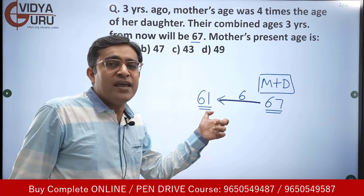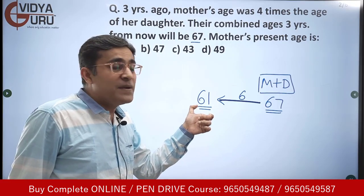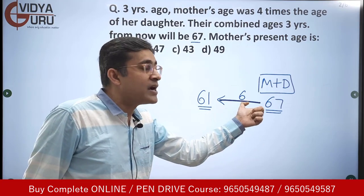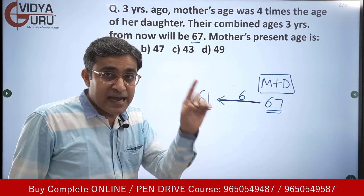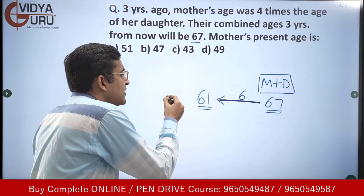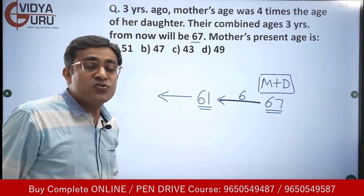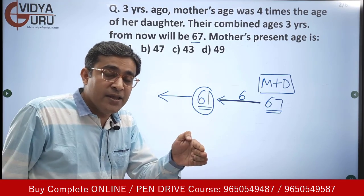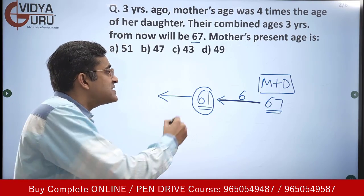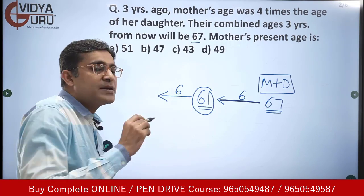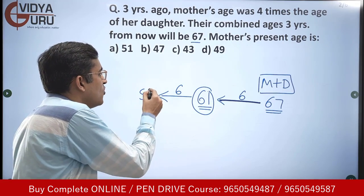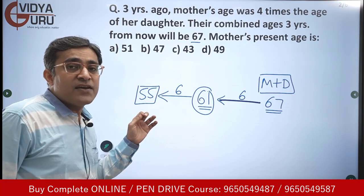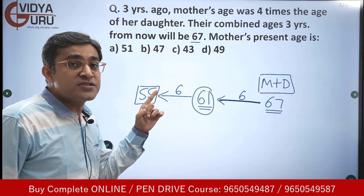The combined age today will be 61, because I'm subtracting three years for the mother and three years for the daughter — subtracting six in total. Similarly, if we go three years back, we subtract another six. That means three years ago, their combined ages was 55.